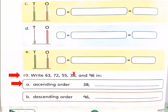Which is the smallest number? Yes, 55. So we will cross 55 and we will write it down. And now there are three numbers, 63, 72 and 96. Which is the smallest number in these three numbers? Yes, 63.